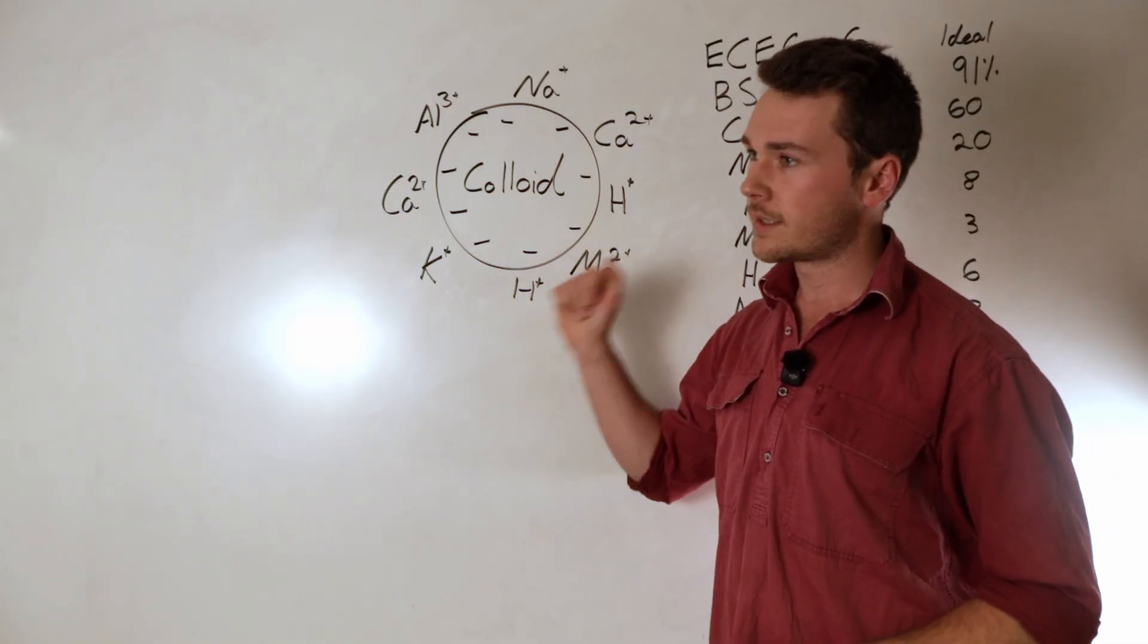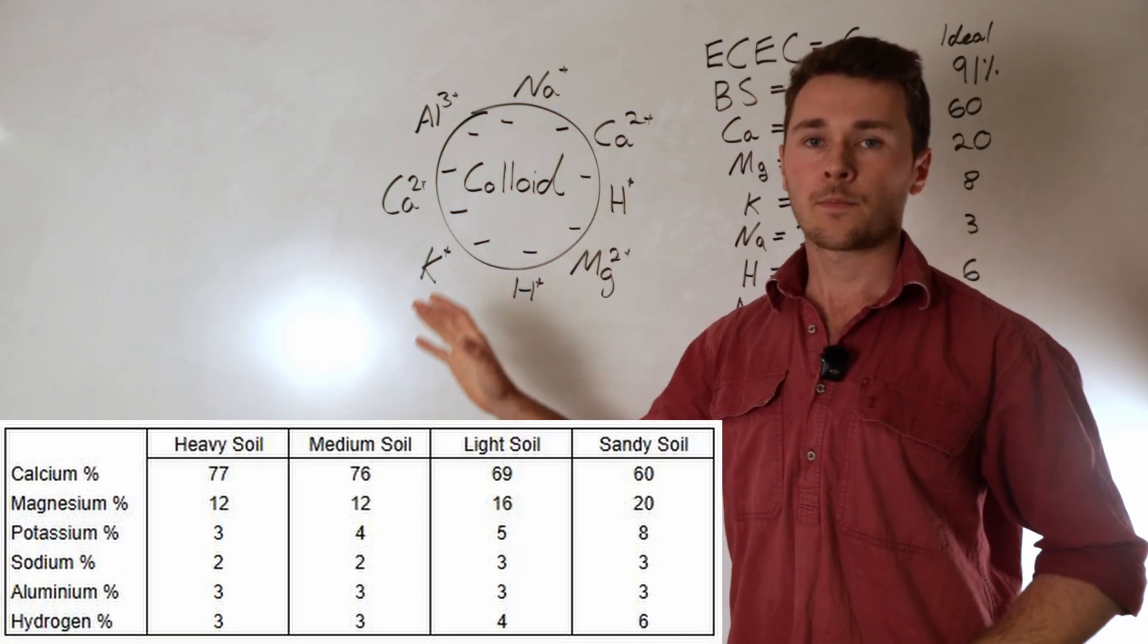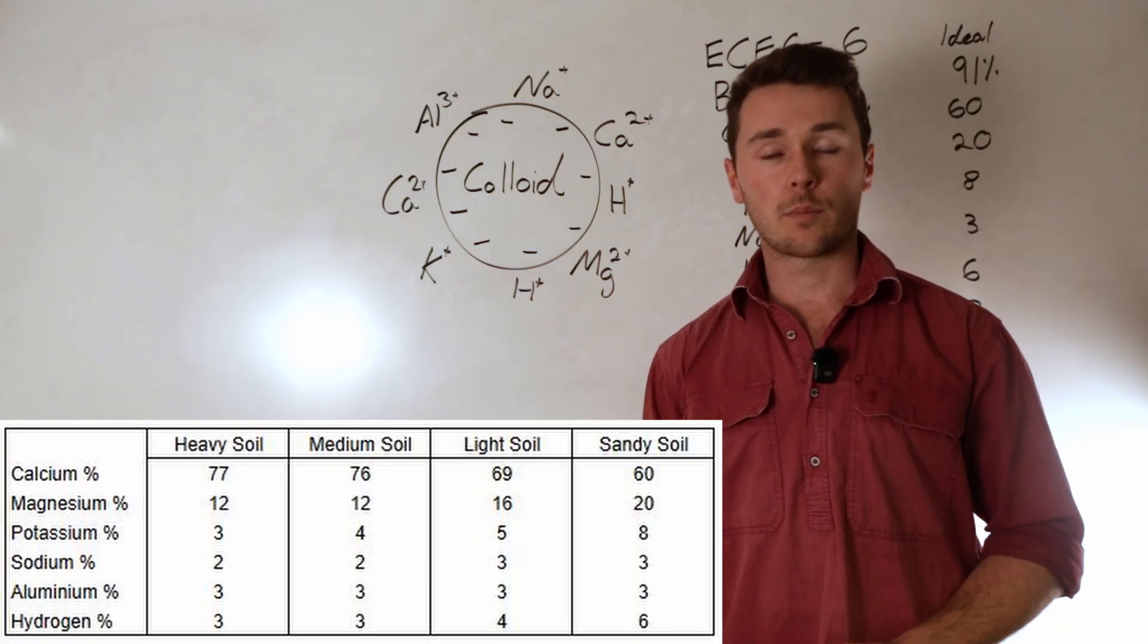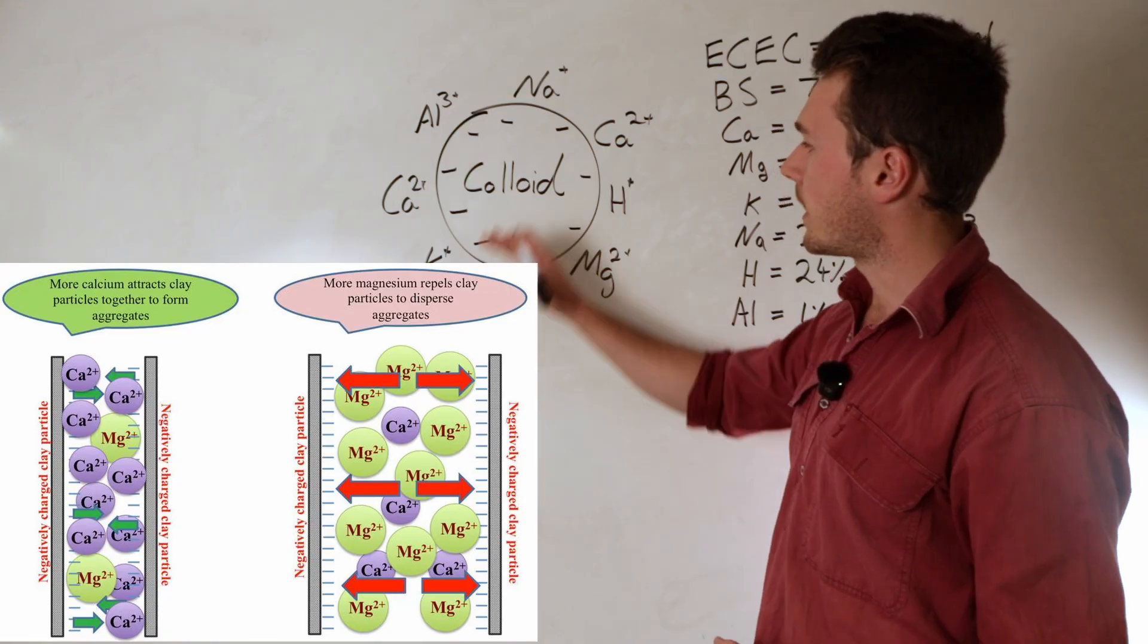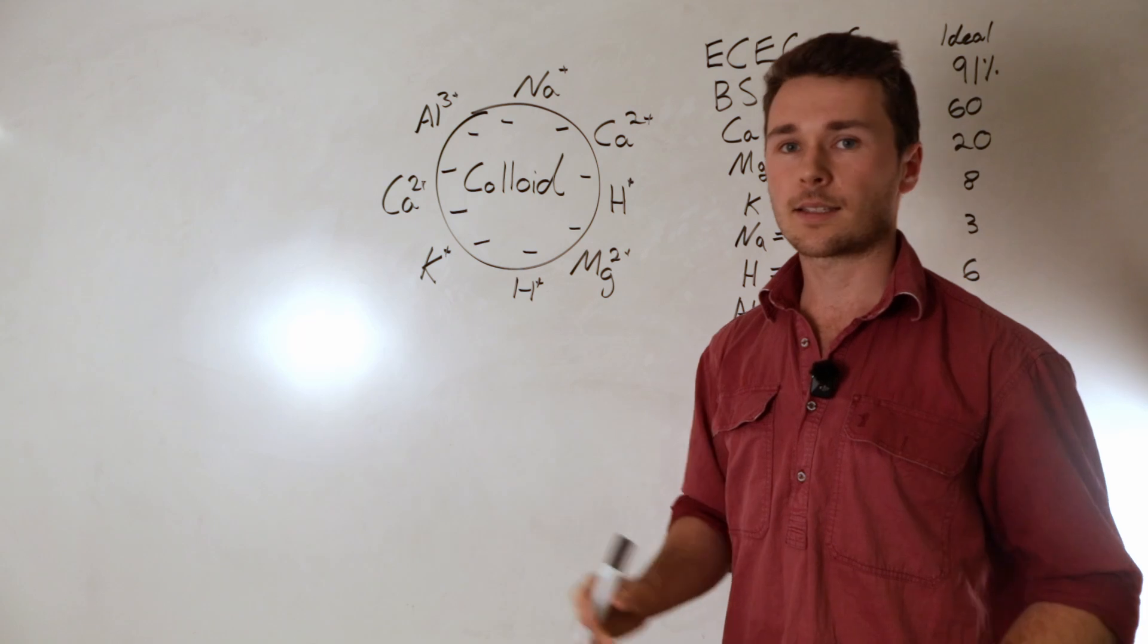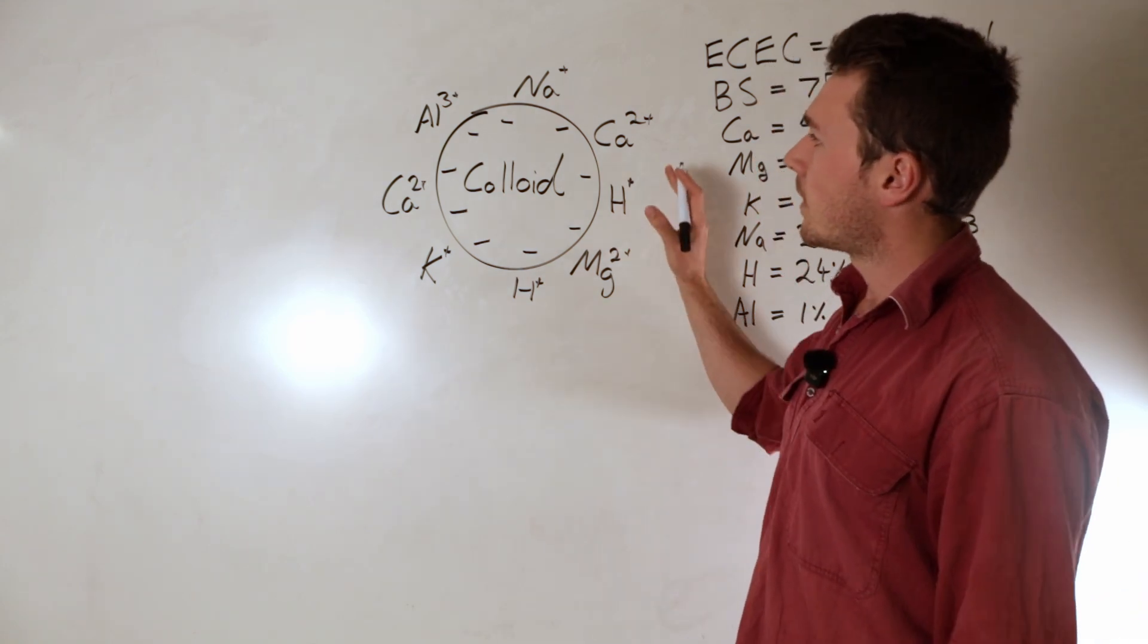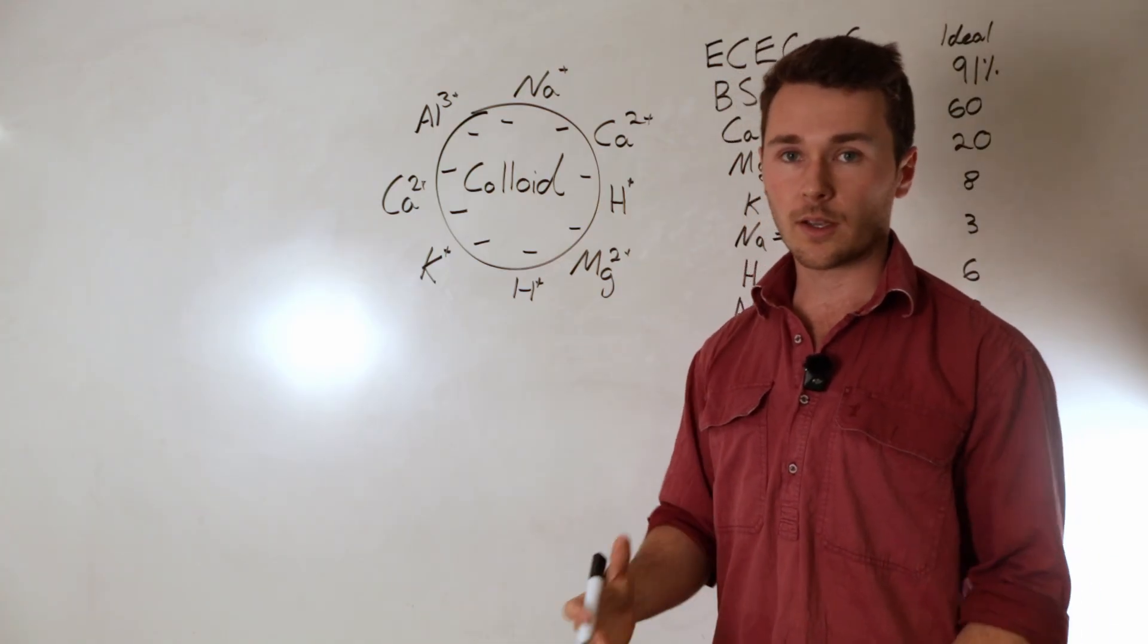So again, you can see the ideal percent of the cations on the colloid here for different soil types. So in a heavy clay we effectively want a bit more calcium to stick the soil particles together. Now a big component of the Albrecht soil balancing method is the Cal-Mag ratio, and we've discussed that in another video. But the cations do have a pretty important role in soil structure and soil aggregation.